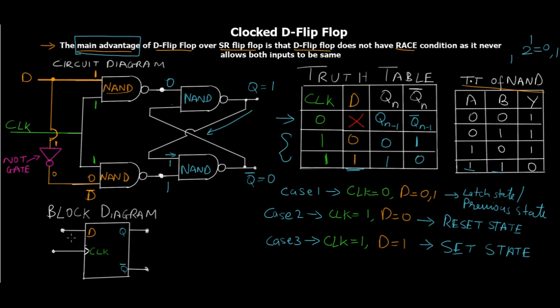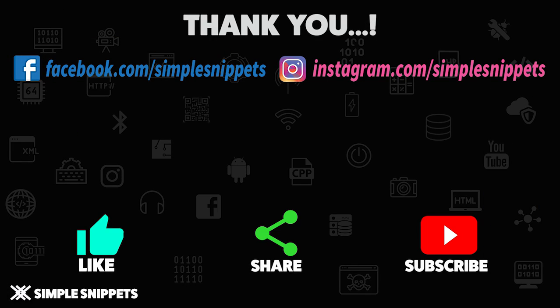Looking at the block diagram, only one thing has changed: there is a single input D instead of separate S and R. The clock and the outputs Q and Q-bar remain the same. The output SR latch portion is identical; only the input side combined with the clock is modified for the D flip-flop. That's it for this video — if you found it helpful, give it a thumbs up, share it, and subscribe to get notified of new tutorials.